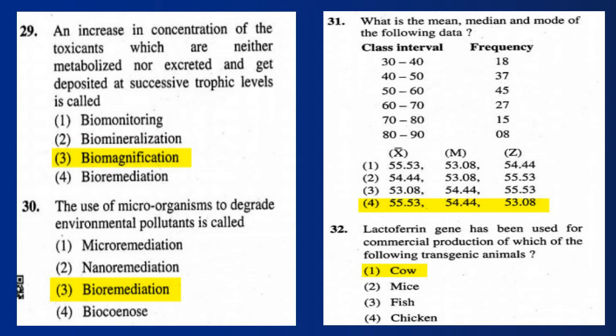Question 31: What is the mean, median, and mode of the following data? The correct answer is option 4. Question 32: The lactoferrin gene has been used for commercial production of which transgenic animal? Answer: cow.